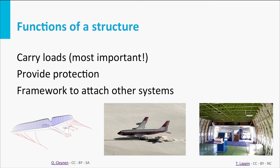The second picture illustrates the protection function. Passengers, crew and cargo should be protected against all kinds of hazards, like crashes or less severe impact of hailstones. Protection is also needed against the cold environment, like a temperature of minus 60 degrees Celsius at cruise altitude of 11 kilometers.